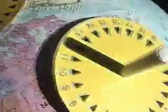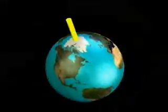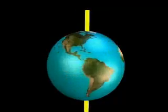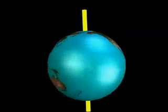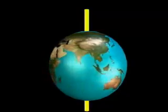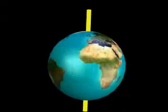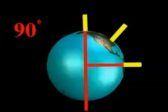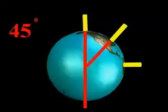Setting our local sundial to 12 noon and moving north, we find that the sundial at the North Pole agrees. The reason the sundial works so well at the North Pole is because the gnomon — the shadow-casting post — is parallel to the Earth's axis. The gnomon at the equator is at 90 degrees to the Earth's axis, and the gnomon in the Ottawa Valley is at 45 degrees to the Earth's axis.